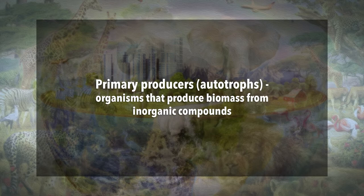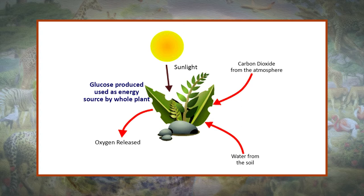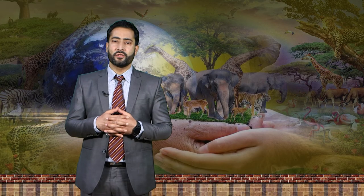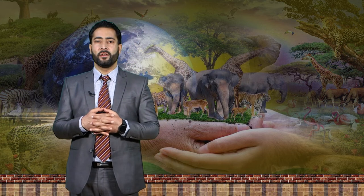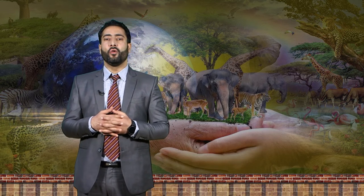Primary producers, or autotrophs, are organisms that produce biomass from inorganic compounds. Generally, these are photosynthesizing organisms such as plants or algae, which convert energy from the sun using carbon dioxide and water into glucose, stored within the plant as energy, with oxygen released into the atmosphere. In terrestrial ecosystems, primary production comes mainly from vascular plants such as trees, ferns, and flowering plants. In marine ecosystems, algae and seaweed fill this role. There are also deep-sea primary producers called chemoautotrophs, which perform oxidation of chemical inorganic compounds instead of photosynthesis.